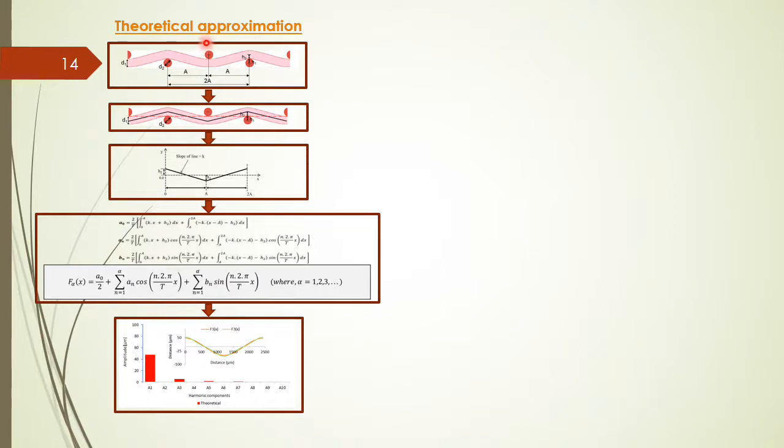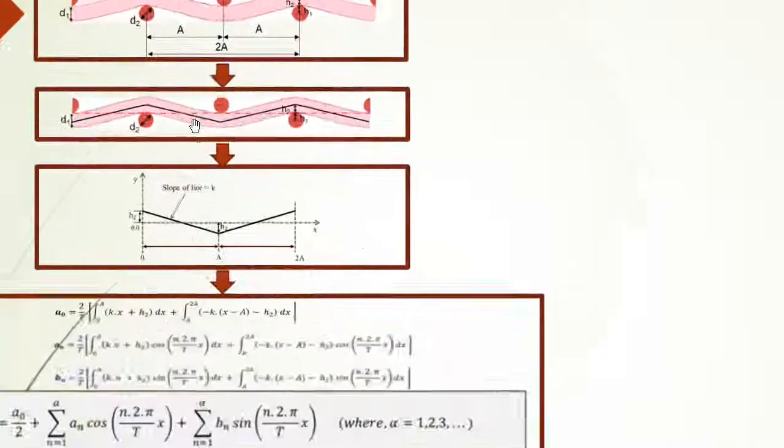First we have a theoretical approximation. This is the modeling. We have theoretical approximation using the linear function, in which we have one repeat. We can calculate the slope, we have the heights and the diameters.